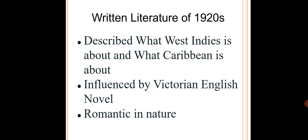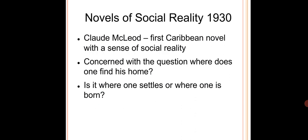Novels and short stories of this period were influenced by the Victorian English novel and were very romantic in nature. In the year 1930, there were novels of social reality. The writer who stands out from this period is Claude MacLeod. He wrote the first Caribbean novel which had a sense of social reality, and he employed a bit of local dialect.